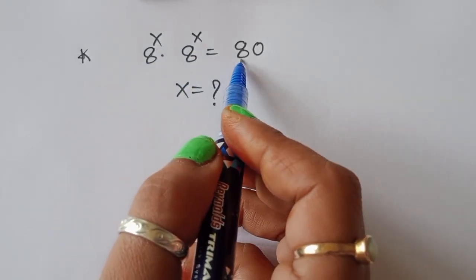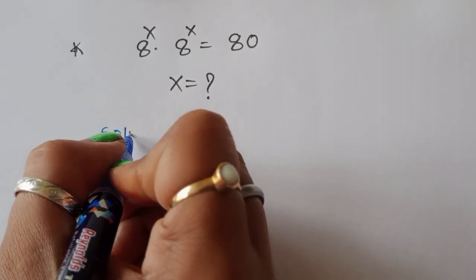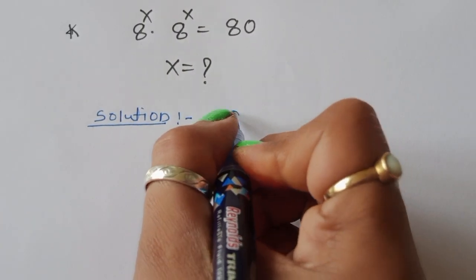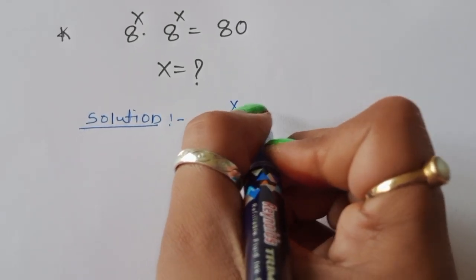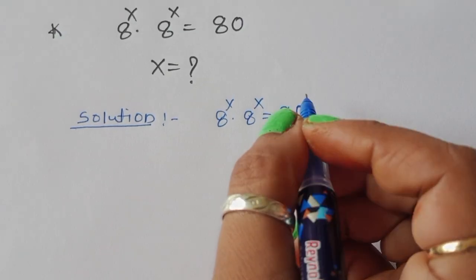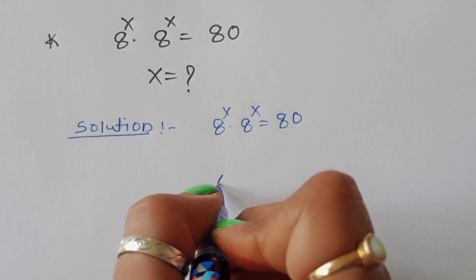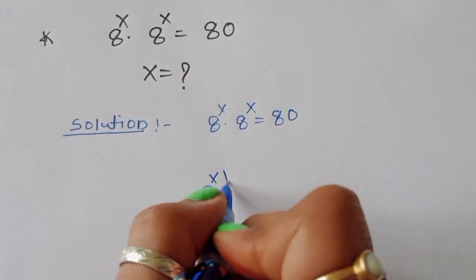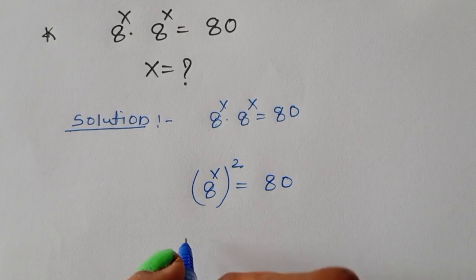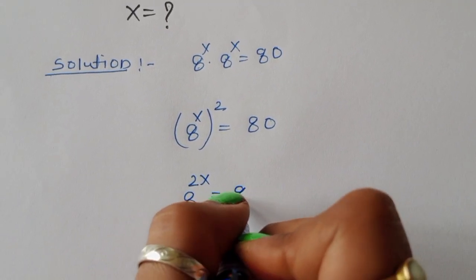We have 8^x times 8^x is equal to 80, and we have to find the value of x. We can write 8^x times 8^x as (8^x)² which equals 8^(2x), so 8^(2x) is equal to 80.